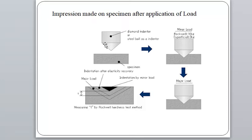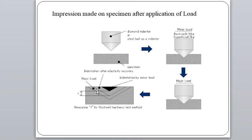The final step is to calculate the average of all trial readings to get the final hardness value. The diagram shows the impression made on the specimen: when minor load is applied, there is initial penetration shown by the black region. When major load is applied, there is deeper penetration, and the depth denoted by 't' represents the depth of penetration after major load application.